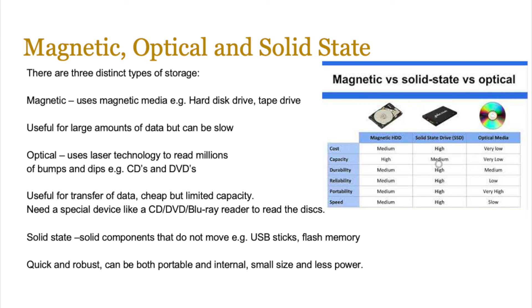That's all for today. You should understand the differences between the three types of storage. Magnetic storage uses magnetic media — examples are hard disk drives and tape drives — useful for large amounts of data but slow and cheap. Optical storage uses laser technology to read millions of bumps and pits — examples are CDs, DVDs and Blu-rays — useful for data transfer, cheap but very limited in capacity, and requires a special reader device. Solid-state uses solid components that do not move — examples include SSDs, SD cards and USB sticks — quick and robust but more expensive with a limited number of write cycles.